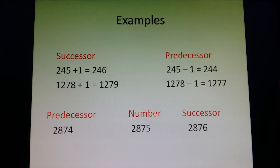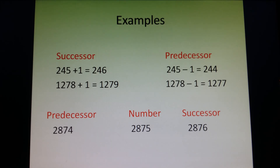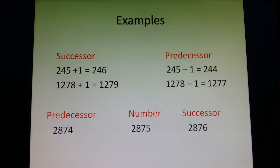Let's take examples. In successor, if we add 1 to the number 245, we get 246. And if we add 1 to the number 1278, we get 1279. In predecessor, if we subtract 1 from 245, we get 244. And if we subtract 1 from 1278, we get 1277.